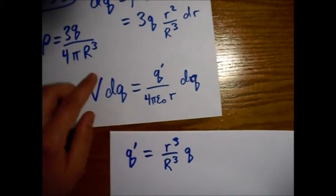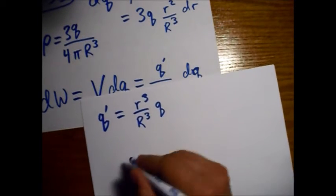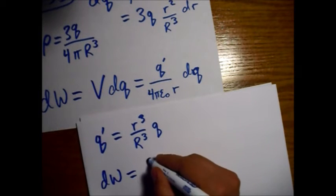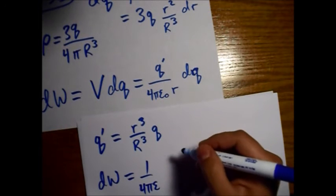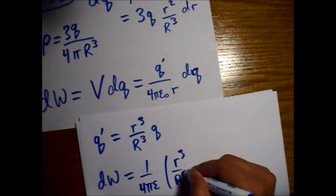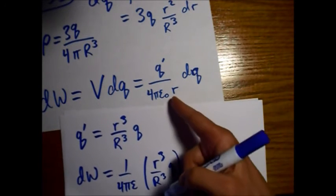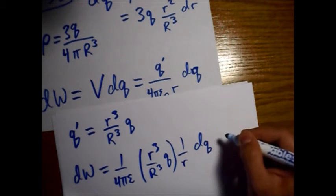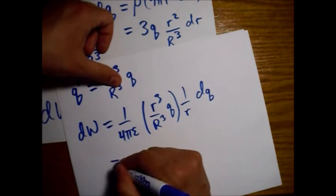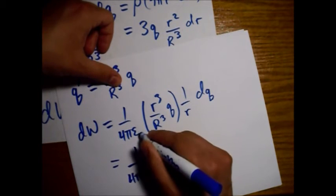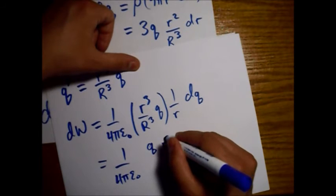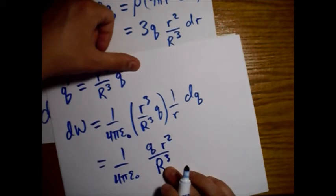Now I'm just going to plug this Q prime in. We have a 1 over 4 pi epsilon naught from here. Then we are going to plug in R cubed over big R cubed times Q. Then we have this 1 over R, and we have a dQ. We'll do this in another step - 1 over 4 pi epsilon naught. What we have is one Q here, two little r's on top power of 2, a big R cubed.